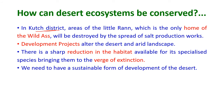In the Kutch district, the areas of the Little Rann — the only home of the wild ass — will be destroyed by the spread of salt production work. During the monsoon period, seawater from the sea enters the land areas of the Little Rann and accumulates. People store this seawater for salt production, and after the monsoon the water drains and salt works are carried out, affecting the wild ass and the ecosystem of the area.